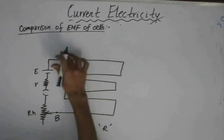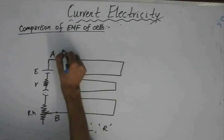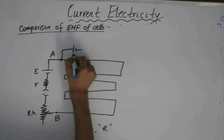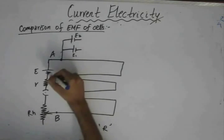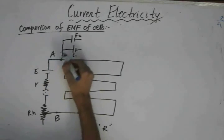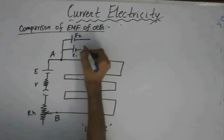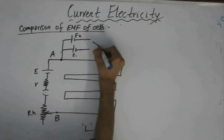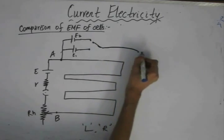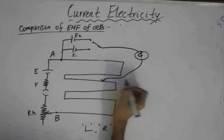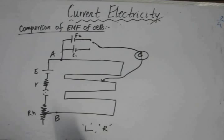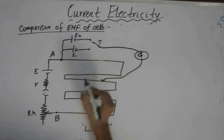We have two EMFs: one is E1 and the other is E2. They are connected such that the positive terminal of the primary circuit is common to both cells. They are connected with a two-way switch to a galvanometer, which in turn is connected to a jockey.